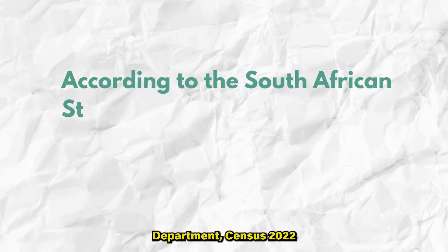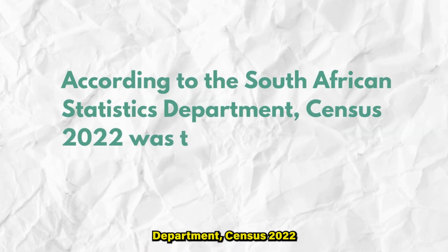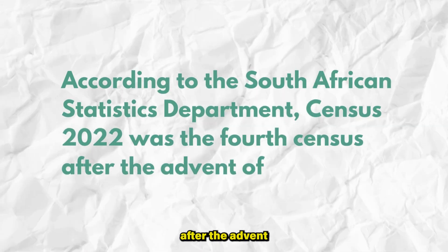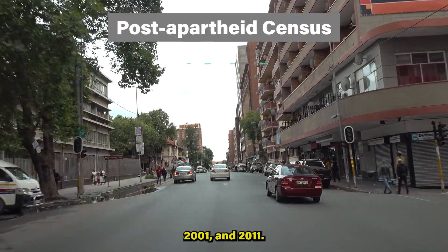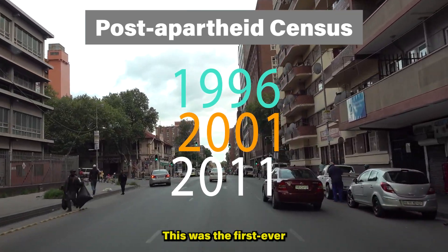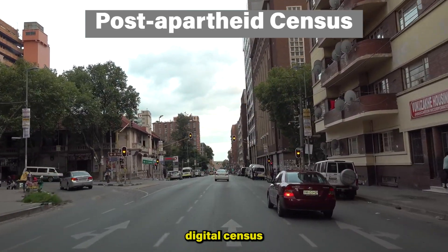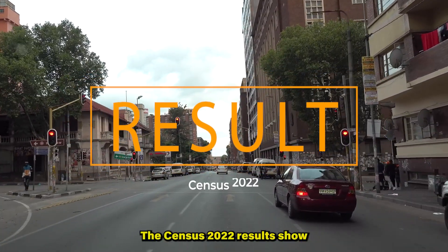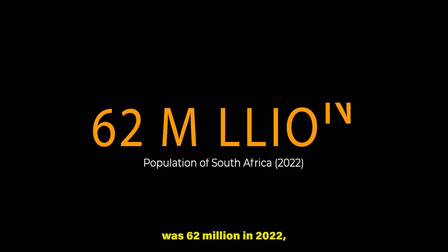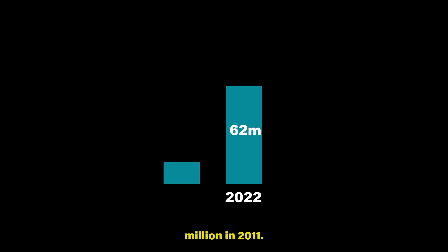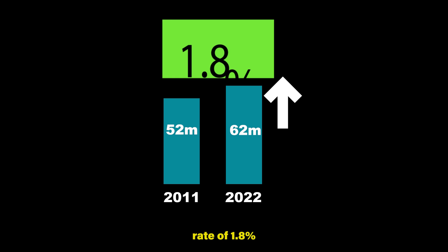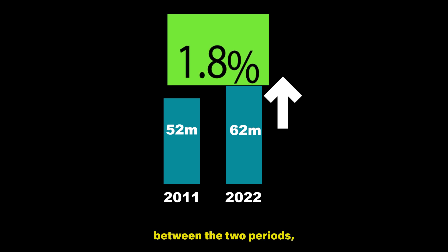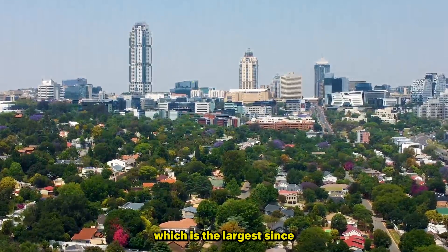According to the South African Statistics Department, Census 2022 was the fourth census after the advent of democracy, with the other three being conducted in 1996, 2001, and 2011. This was the first-ever digital census in South Africa. The Census 2022 result shows that the population of South Africa was 62 million in 2022, increasing from 51.7 million in 2011. This represents an average annual growth rate of 1.8% between the two periods, which is the largest since 1996.